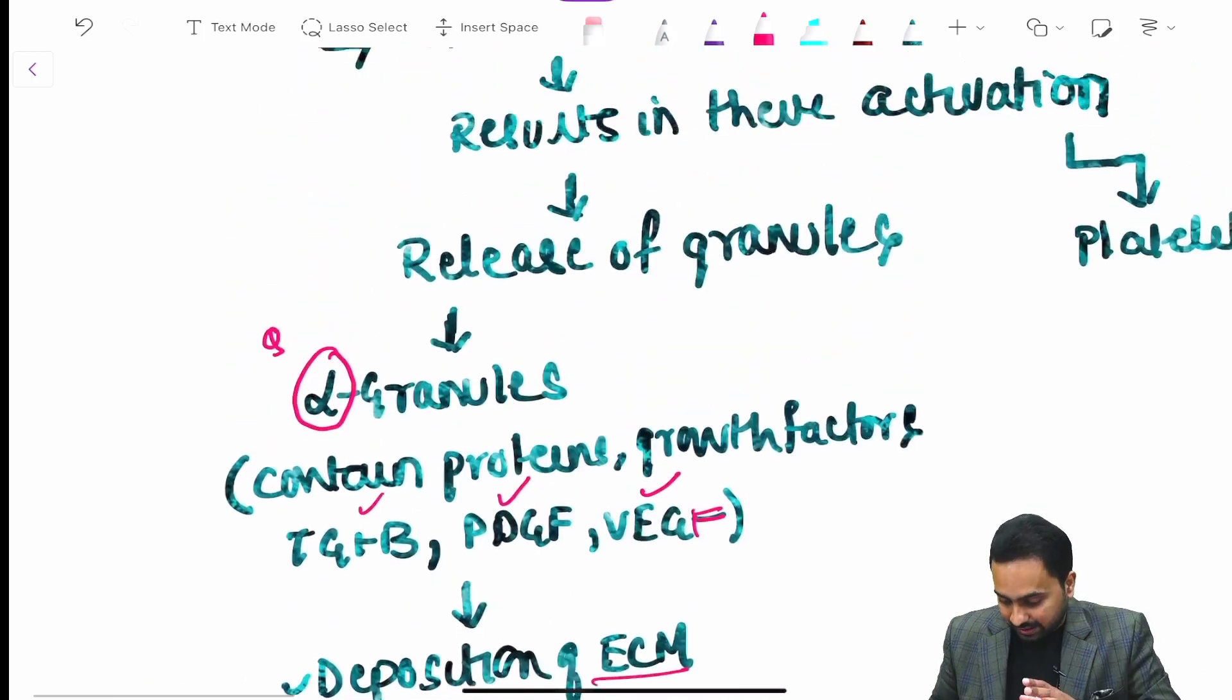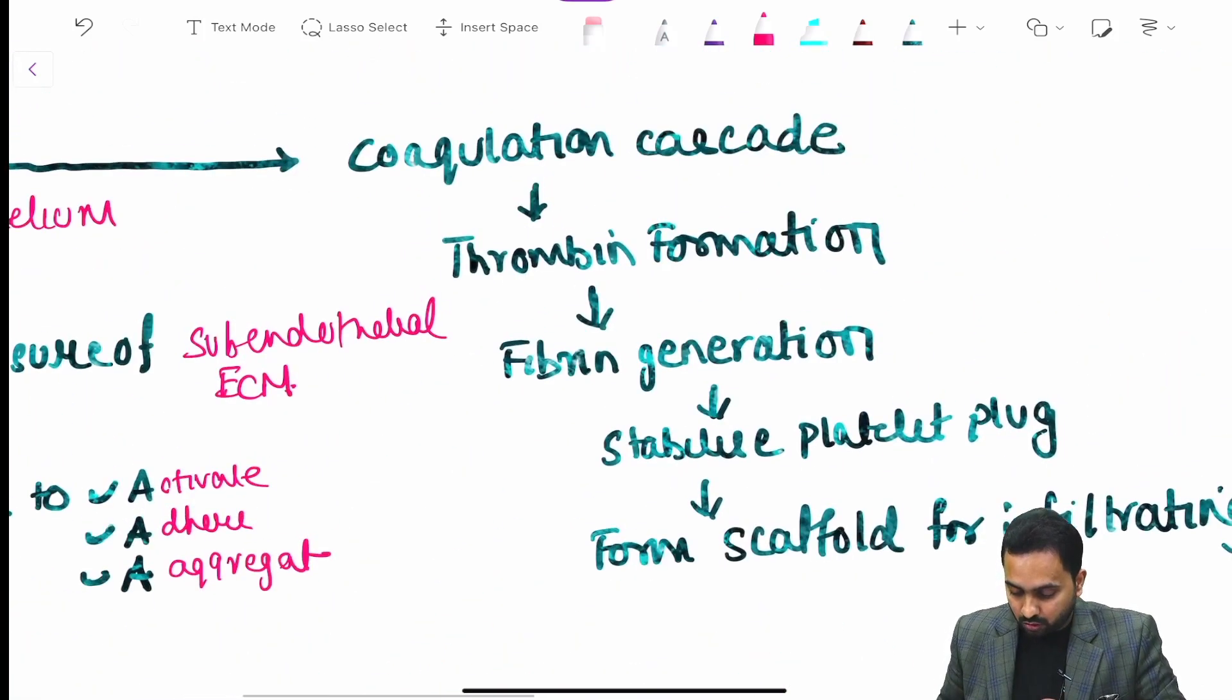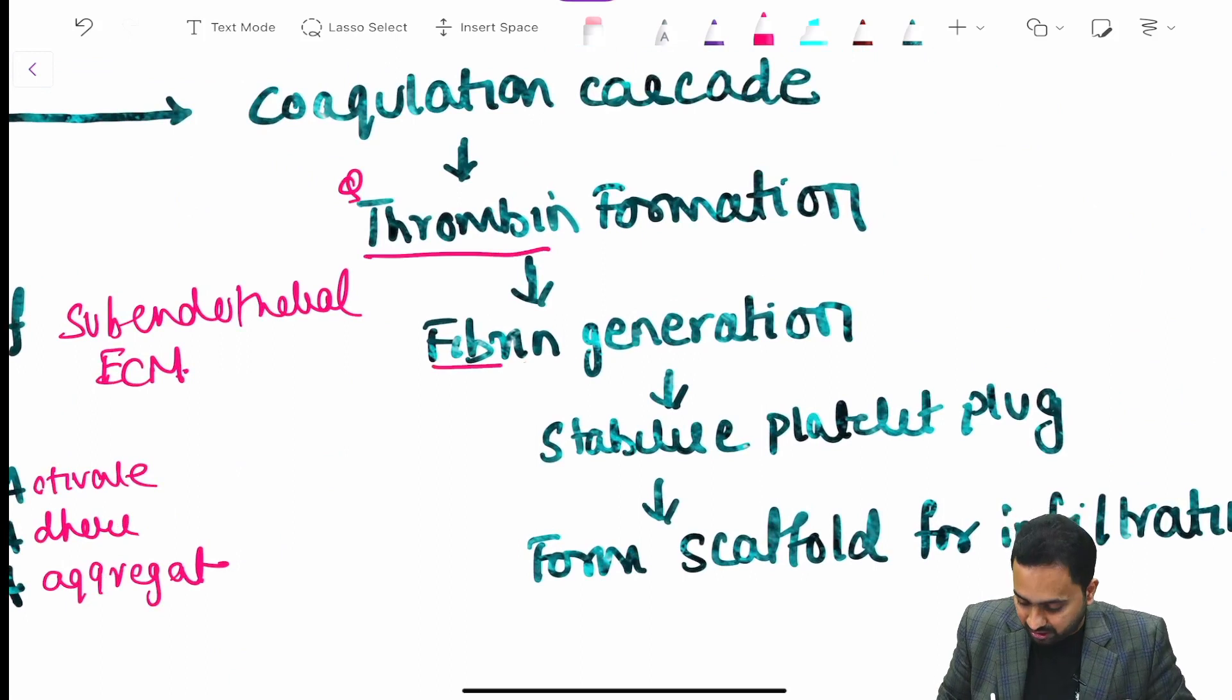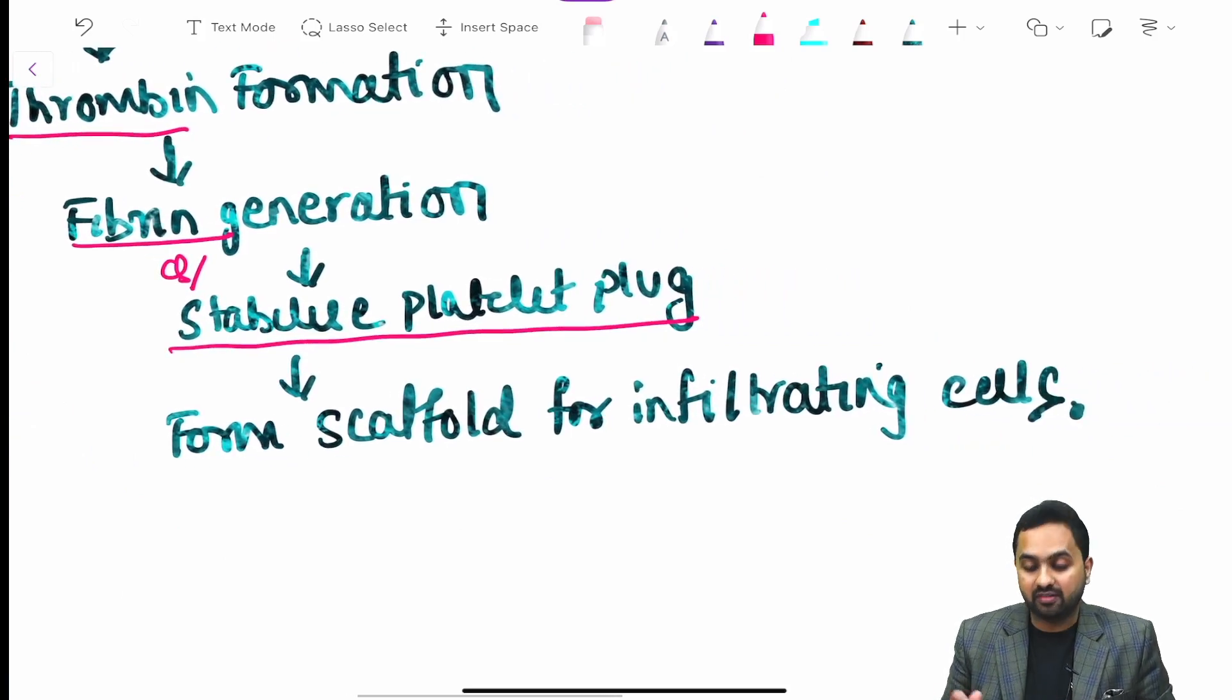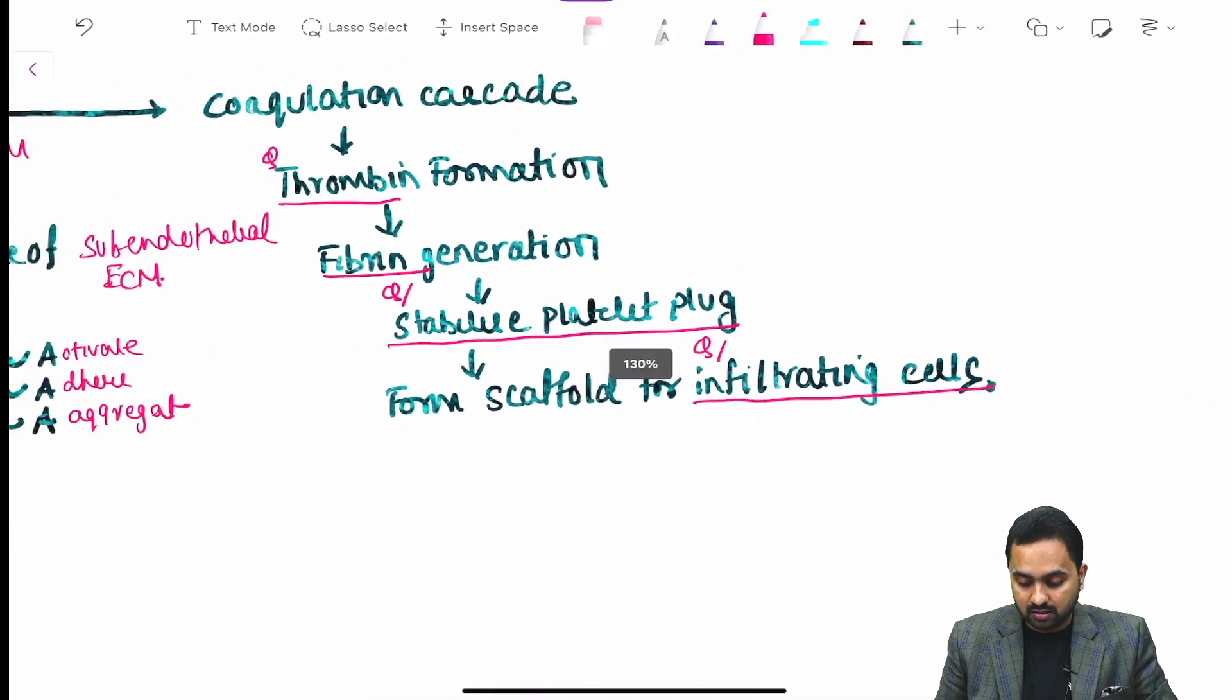At the same time the injury also activates your coagulation cascade which results in the formation of your thrombin that causes fibrin generation and stabilizes the platelet plug which forms the scaffold for the infiltrating cells. So this is your hemostasis phase.